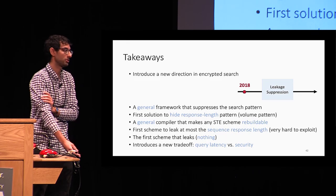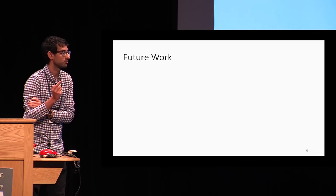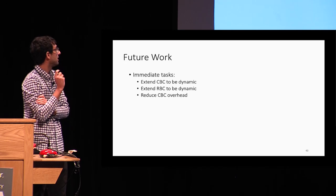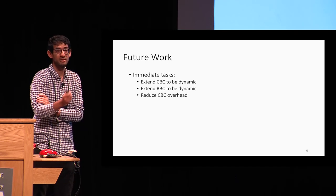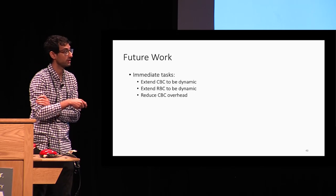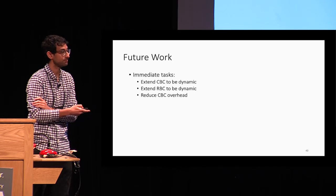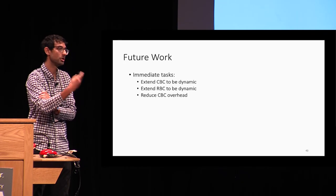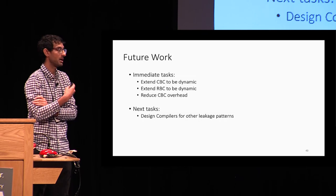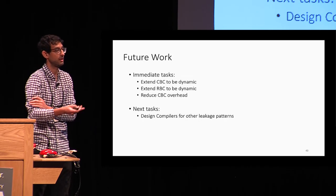Future work that we think is important to tackle: an immediate task is to make the CBC and RBC dynamic, which is not currently the case. We want to reduce CBC overhead and achieve better efficiency. A longer-term task requiring more work is to design compilers that suppress other leakage patterns.